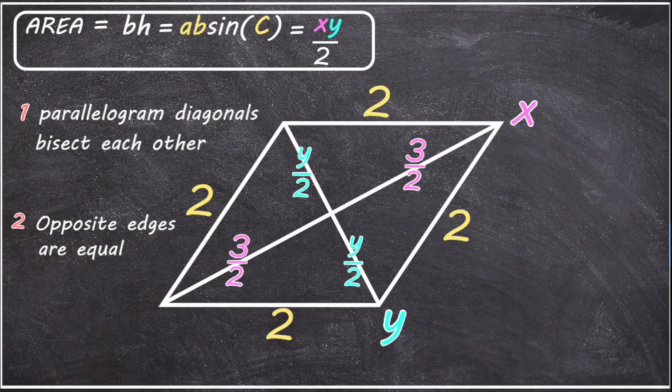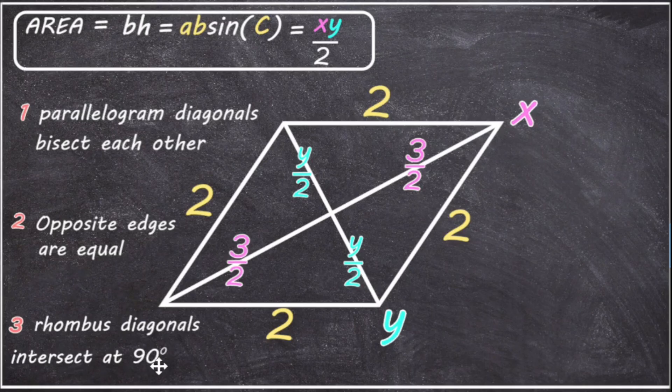And because it's a rhombus, the bisecting diagonals have a unique property. And that is rhombus diagonals intersect at 90 degrees. So the angles at these intersects must be 90 degrees. And because this is a right angle, this has to be a right angle triangle.